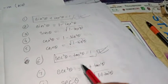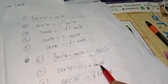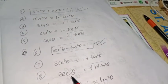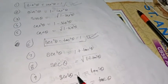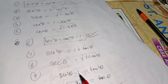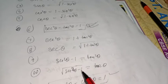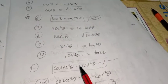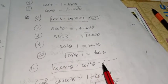From the second identity, sec²θ - tan²θ = 1: if you transfer tan²θ to the right-hand side, sec²θ = 1 + tan²θ, so sec θ = √(1 + tan²θ). If you transfer 1 to the left-hand side, sec²θ - 1 = tan²θ, so tan θ = √(sec²θ - 1).